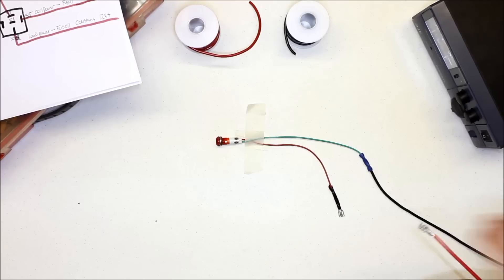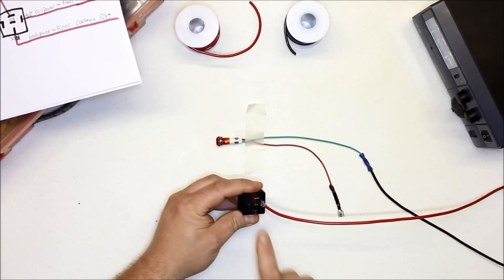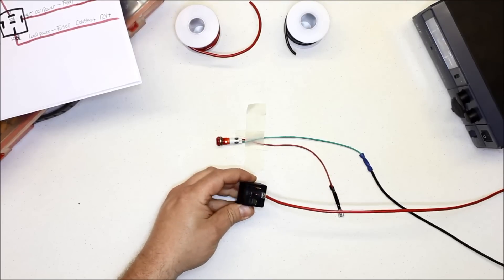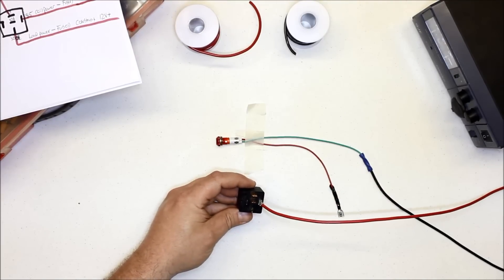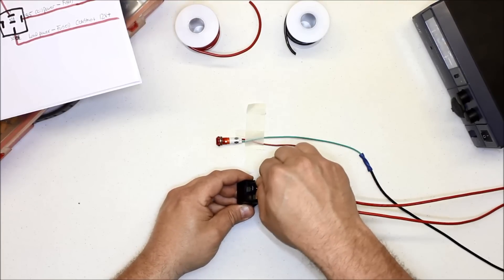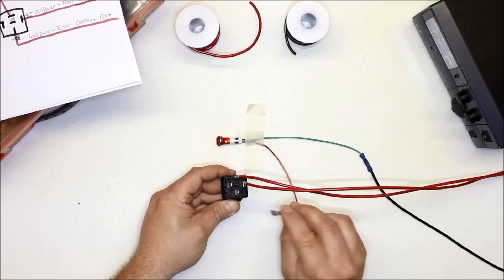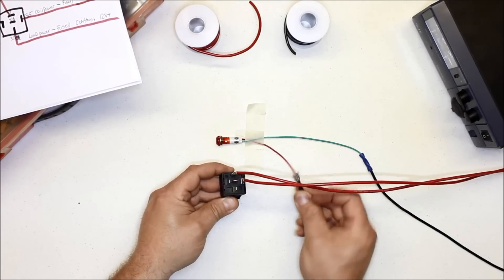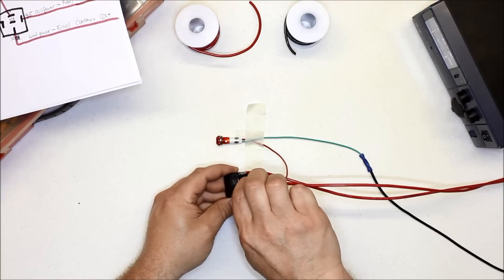You would take a constant 12 volt source and go to one half of the coil on the relay. Then you would take another 12 volt constant and put it on that terminal of the relay. Then you would take your load, your 12 volt positive wire going to your load, whether it be a trunk release, light bulb, or whatever it may be, and put that on that side of the relay.